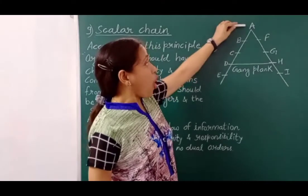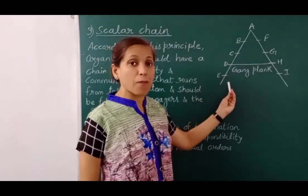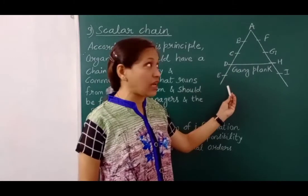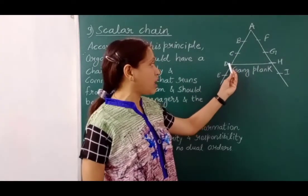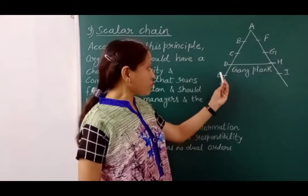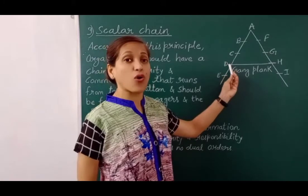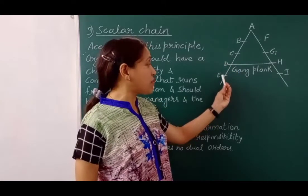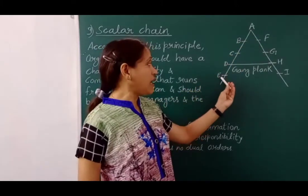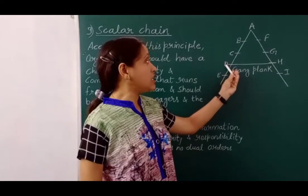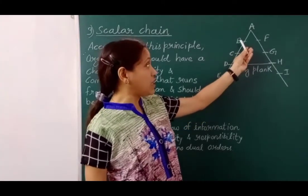Mr. A has the highest authority and two departments work under him. If Mr. A has to pass an instruction to Mr. E, he will not communicate directly with E. He will first give the message to his subordinate B, B will pass the message to C, C will pass it to D, and finally D will pass it to E. E in this case only has to follow Mr. D. Similarly, if Mr. E has to submit a report to Mr. A, he will not interact directly with Mr. A. He will first give the report to his superior Mr. D, D will pass it to his immediate superior Mr. C, C will pass it to B, and finally B will submit it to Mr. A.